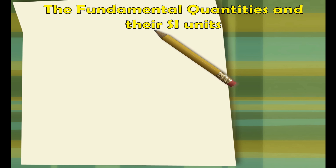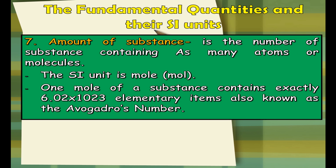The seventh SI unit of measurement is amount of substance. It is the number of substance containing as many atoms or molecules. The SI unit for this is mole or mol. One unit of substance contains exactly 6.02 times 10 raised to 23 particles. Particles can be an ion (a charged atom), an atom, or molecules. This elementary count is also known as Avogadro's number.